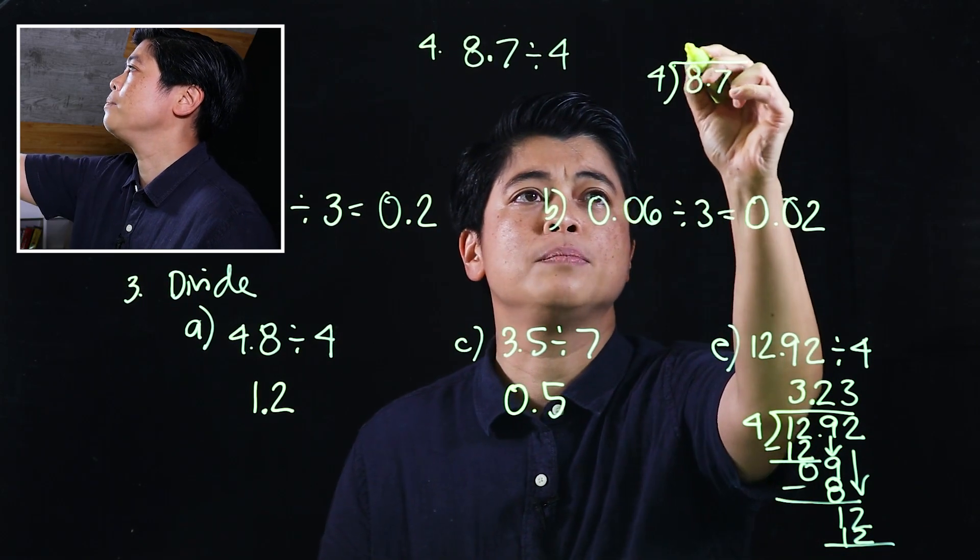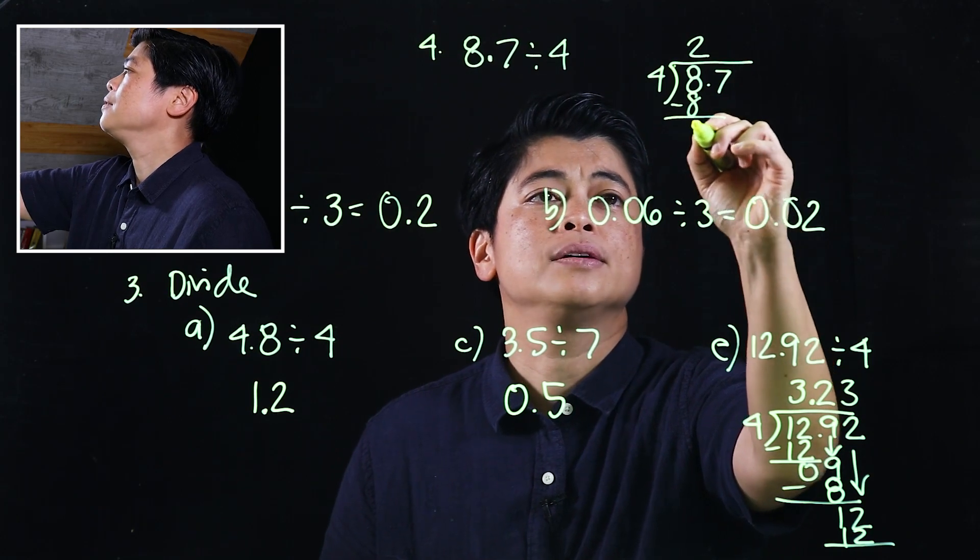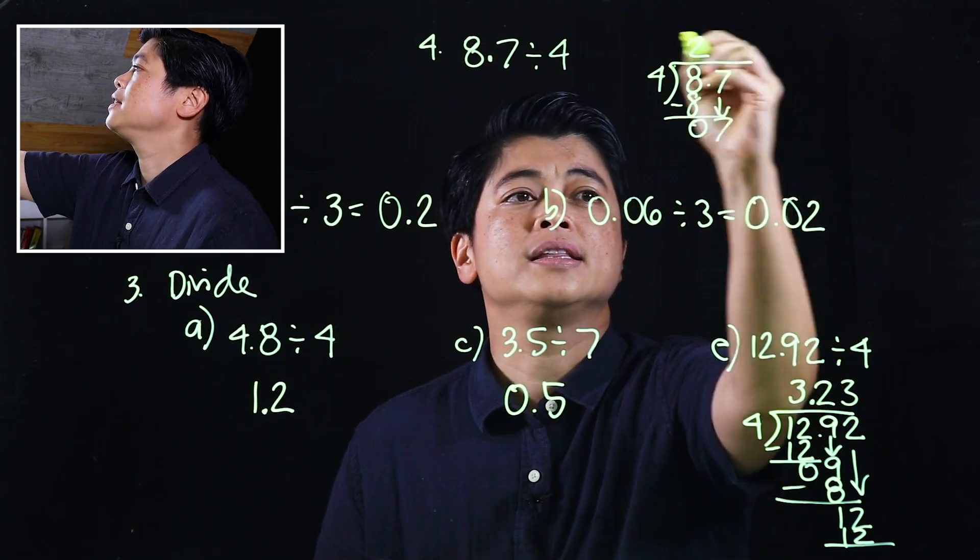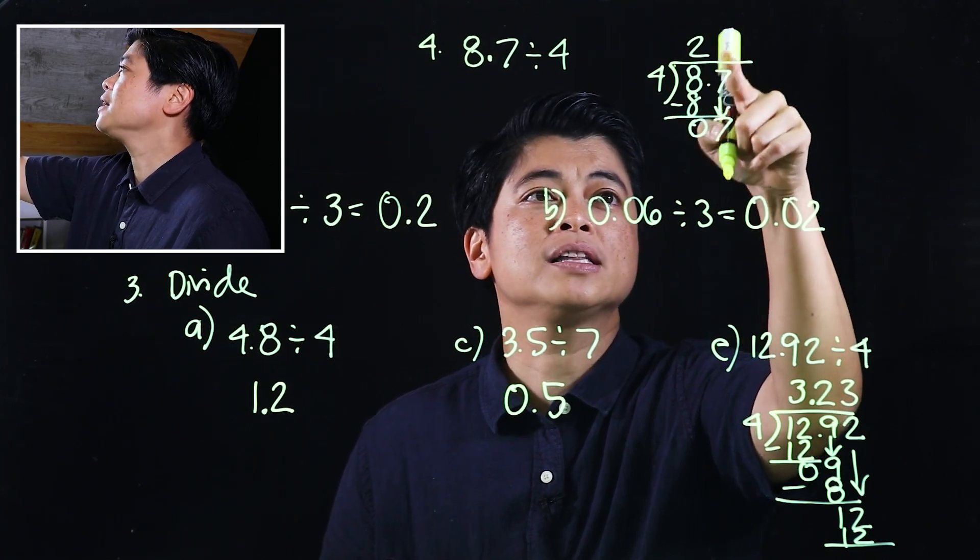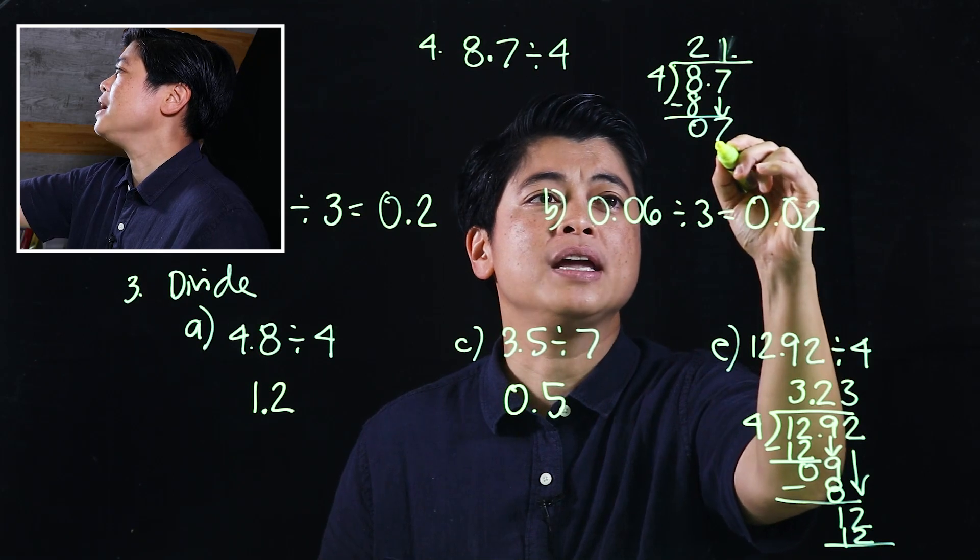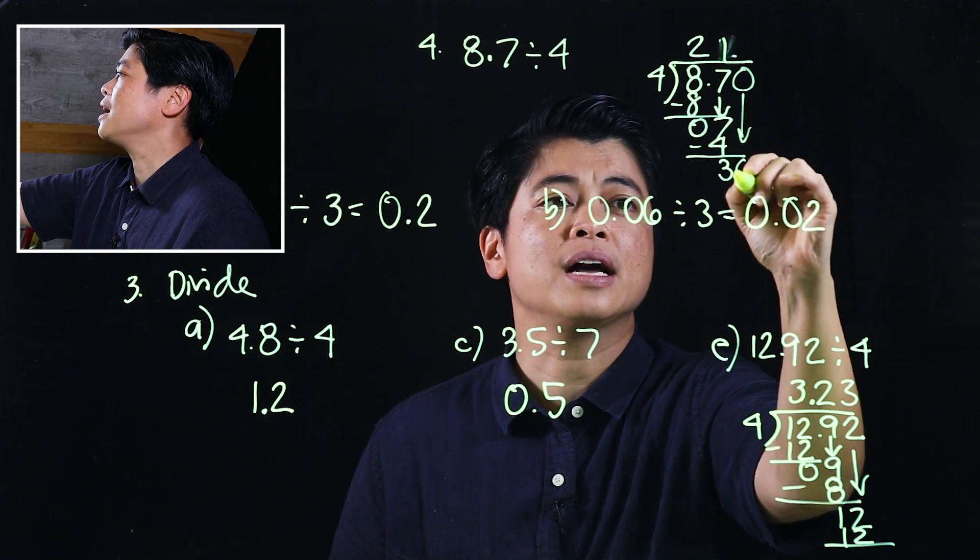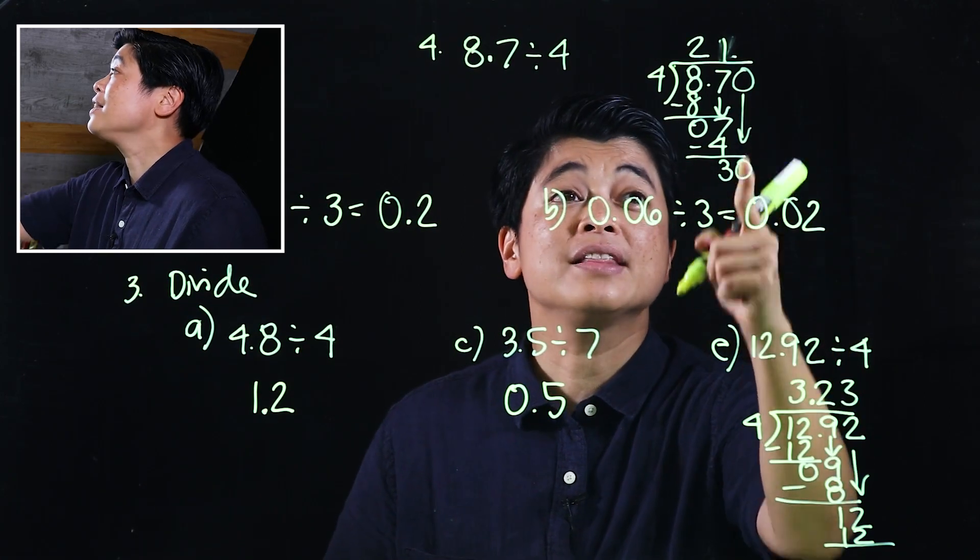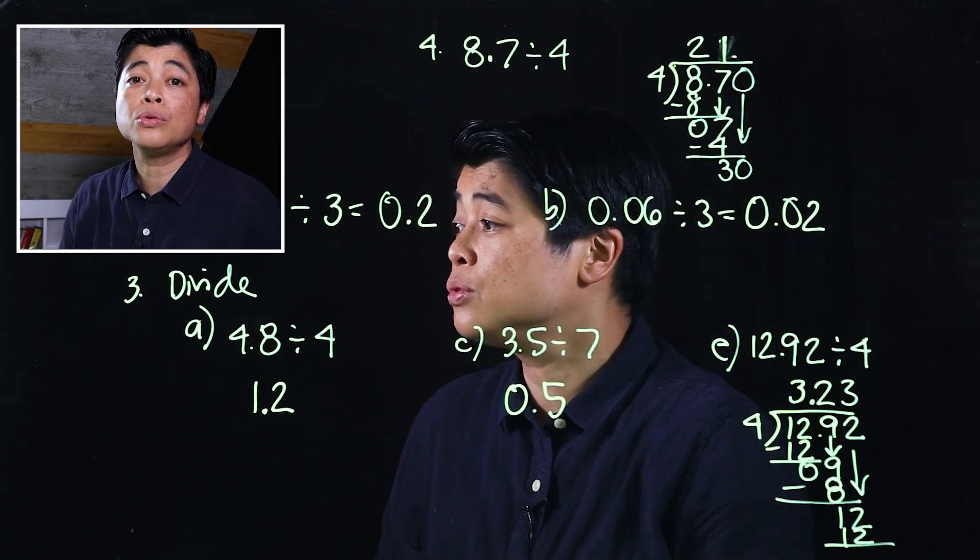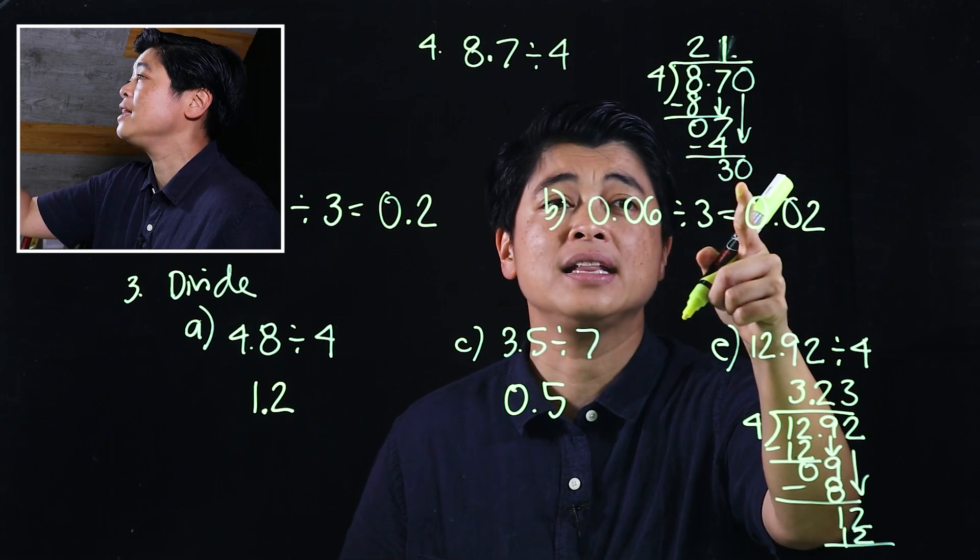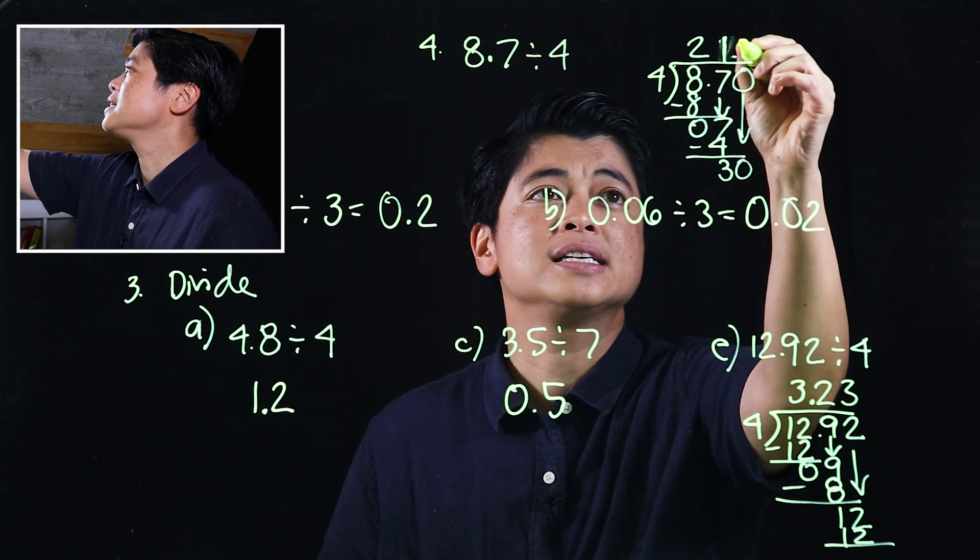This is 4 and this is 8.7. If I divide, that will be 2. Multiply, that will be 8. Subtract will be 0. Bring down will be 7. Divide will be 1. Multiply will be 4. Subtract will be 3. Add a 0, bring down. Here, this is where I will stop after I divide because it wants me to round to one decimal place. If I divide, that will be 30 divided by 4 is 7.